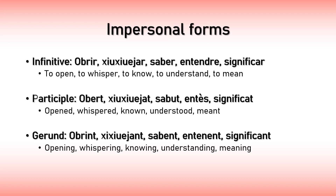Before seeing some examples, I also want to talk about the impersonal forms. Impersonal forms are those not affected by number, gender, or other properties of context. The infinitive — the form we've seen so far — is one of the impersonal forms. You can also use this form if you want to transform a verb into a noun. In English it would be: to open, to whisper, to know, to understand, to mean. The participle is the form used when the action has been done, and also to transform a verb into an adjective.